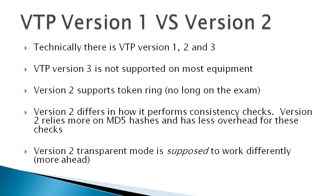VTP has different versions — you can run version 1 or version 2. Technically version 3 is out there, but it's not really supported on most Cisco equipment, so you're generally limited to VTP version 1 and version 2. The differences aren't a whole lot, but VTP version 2 does support Token Ring, which is completely irrelevant since it's no longer on the exam. Version 2 is also a bit different in how it performs consistency checks.